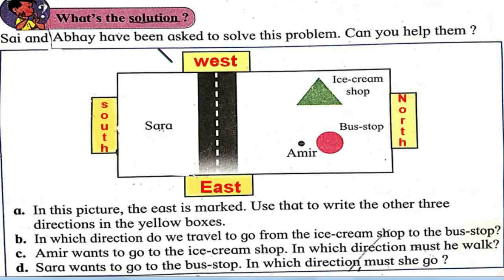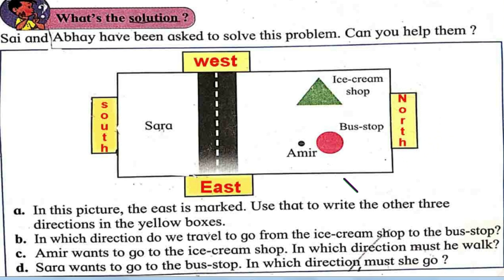Sai and Abhay have been asked to solve this problem — can you help them? Here is Sara and here is Amir. There is an ice cream shop and a bus stop. Since only the East position was given in the textbook, we have labeled all the other directions: South, West, and North — East is already given.